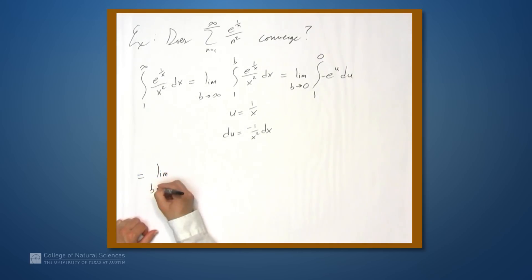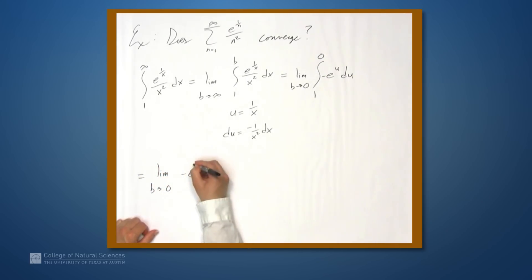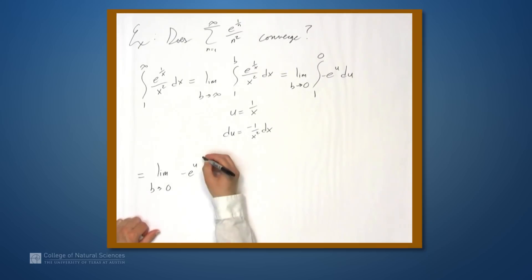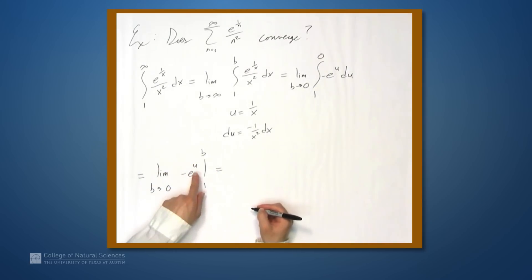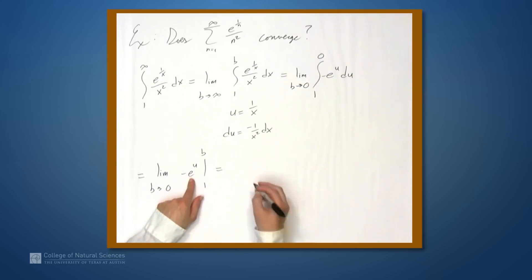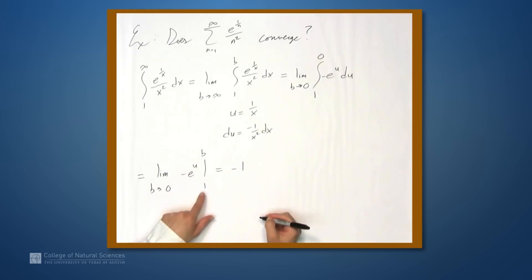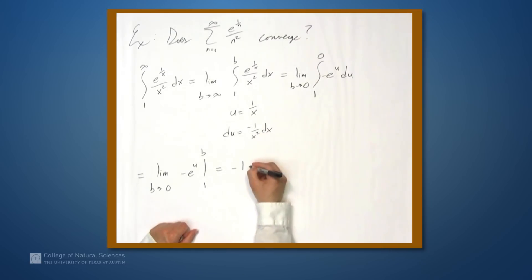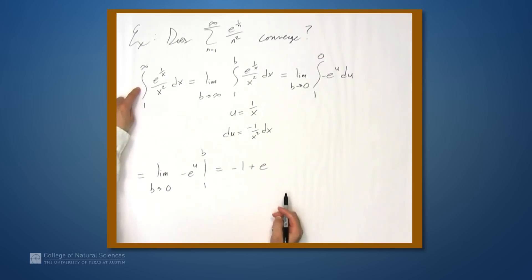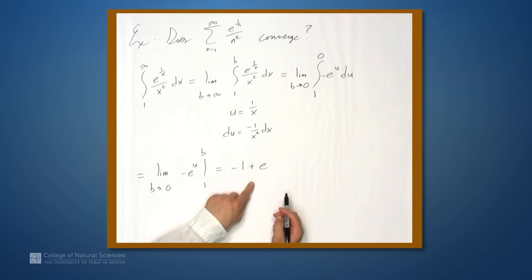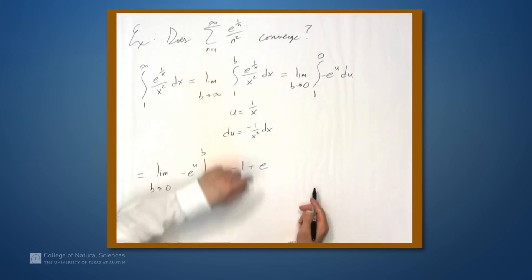We can find the antiderivative quite nicely: the limit as b approaches 0 of negative e to the u evaluated from 1 to b. When we plug b in for u and send it to 0, we get negative e to the 0, which is negative 1. When we plug in 1, we get negative e to the 1, which is negative e. So we have negative 1 minus negative e, which is negative 1 plus e. This improper integral converges to negative 1 plus e, which means the series converges.